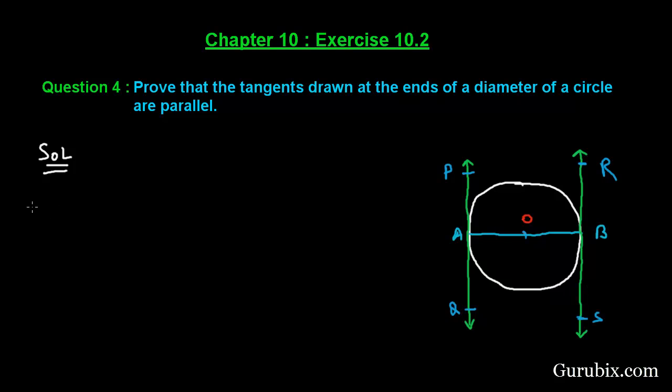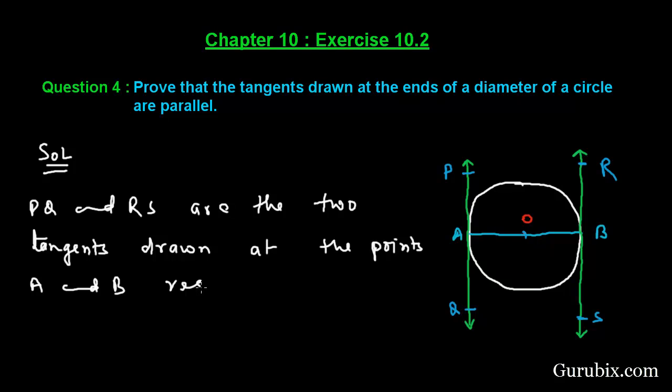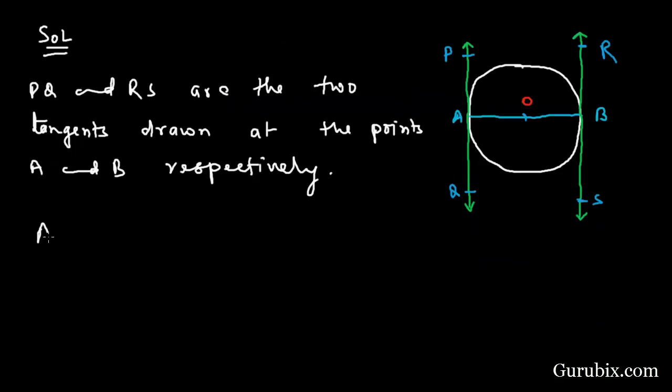We are given that PQ and RS are the two tangents drawn at the points A and B respectively. We are also given that AB is the diameter of the circle.